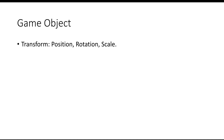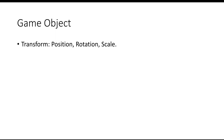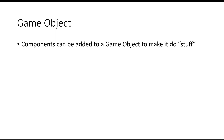Our game object has a transform which includes its position, rotation, and scale. Every single game object in Unity has a transform by default, which we can set in the Unity editor, but until we add other things to our game object it doesn't really do anything — it just sits there in memory occupying a bit of space. In order to give our game object other properties, we have to add other components. Components can be added to our game object to make it do stuff, and the stuff we can make it do is really limitless.